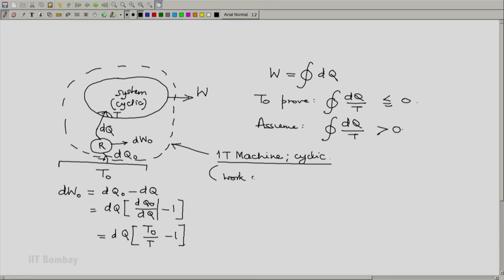The work output is W plus integral of dW0. Now this can be written down as W plus T0 cyclic integral of dQ by T minus cyclic integral of dQ. And from this equation, we know that W equals this cyclic integral. So that cancels out.